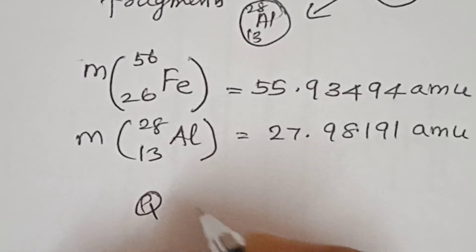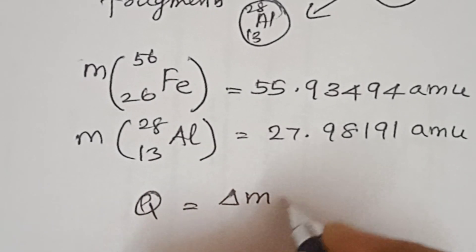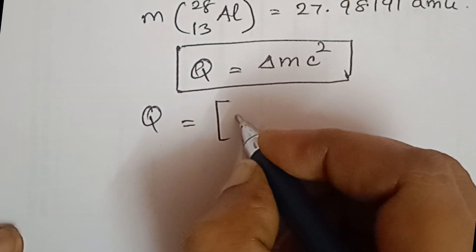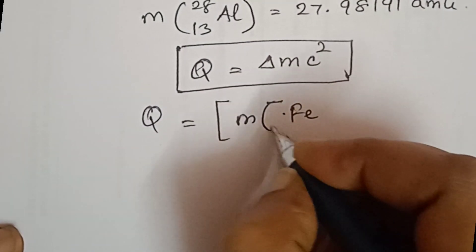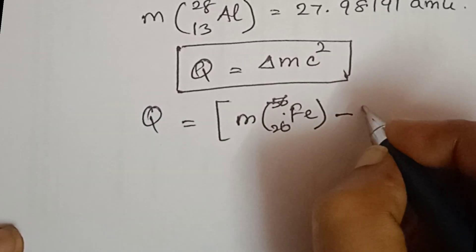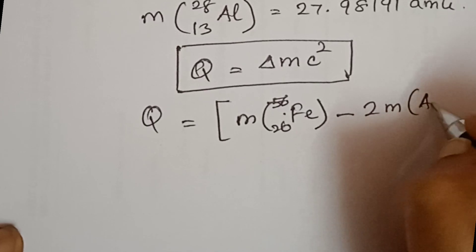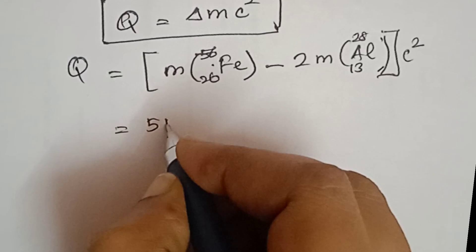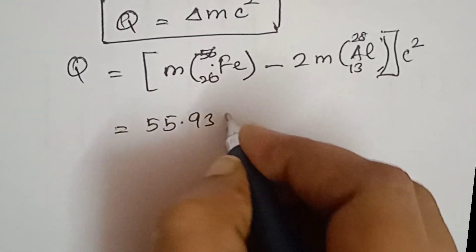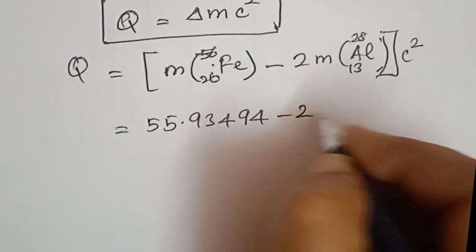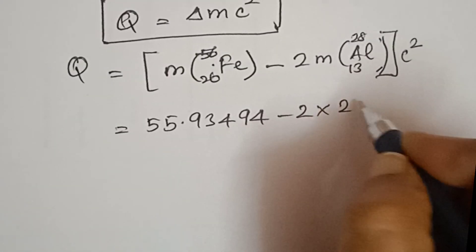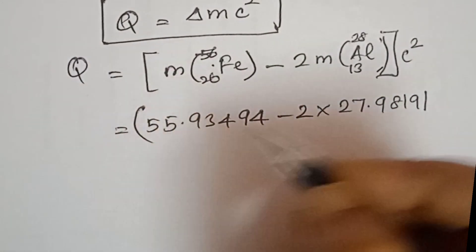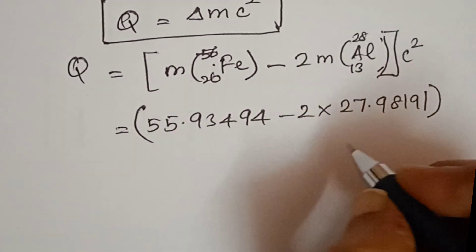Now let's calculate the binding energy using the Q-value. Q is equal to delta-M times c-squared. The mass defect is equal to the mass of Fe-56 minus 2 times the mass of aluminium. So: 55.93494 minus 2 times 27.98191, multiplied by 931.5 MeV per atomic mass unit.